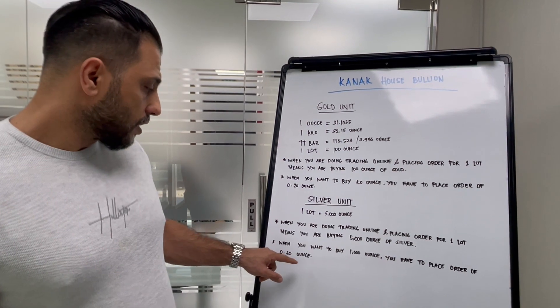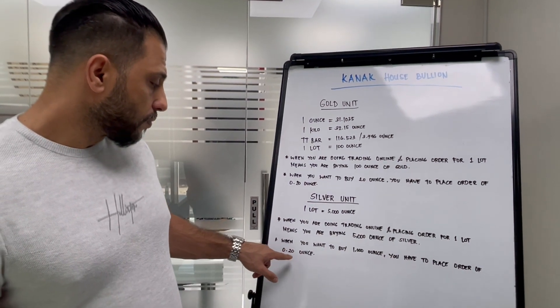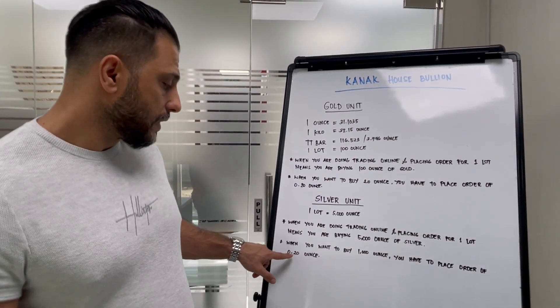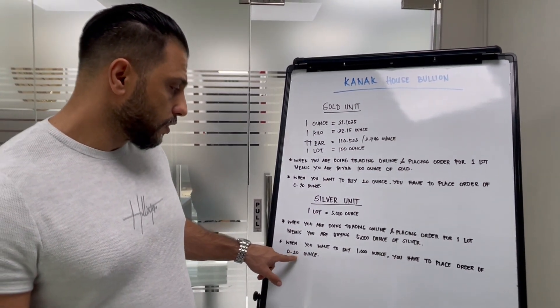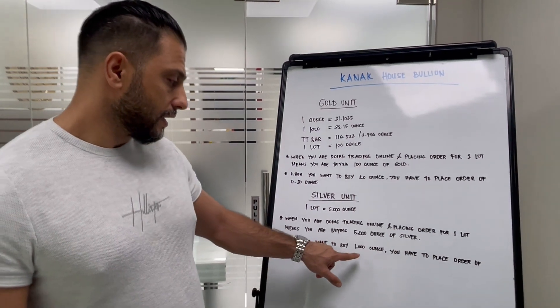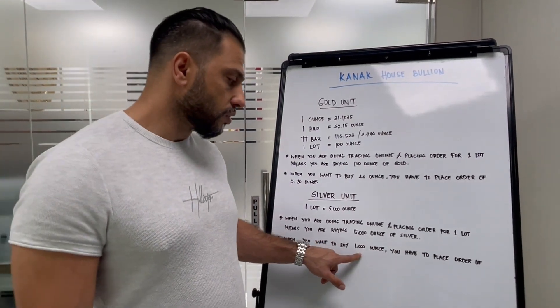you have to place an order of 0.20. When you place 0.20, you are getting 1,000 ounces of silver.